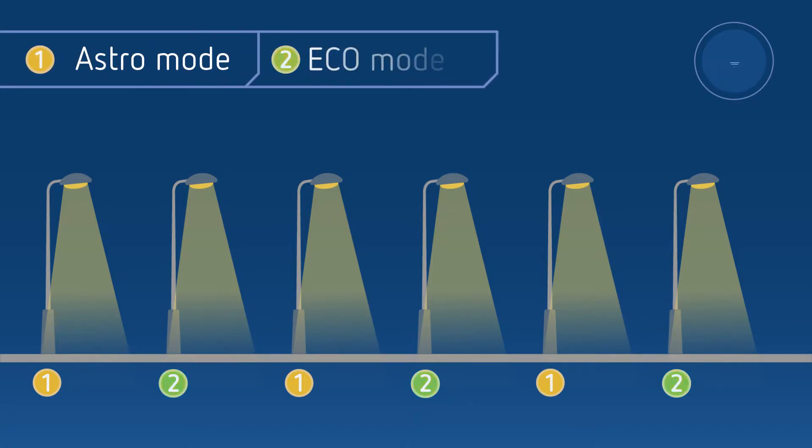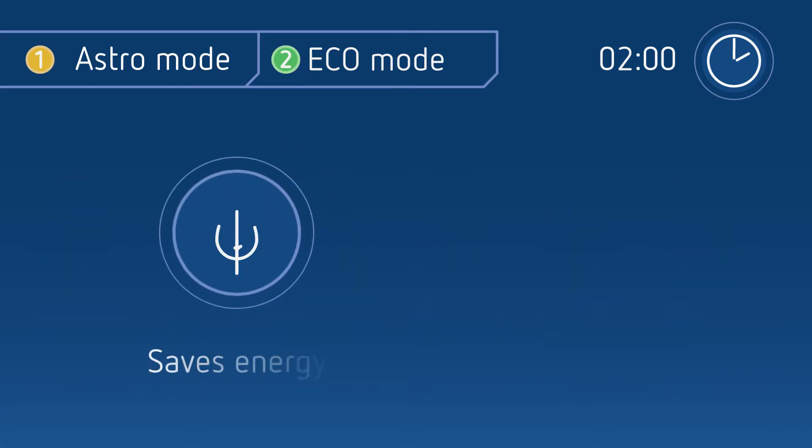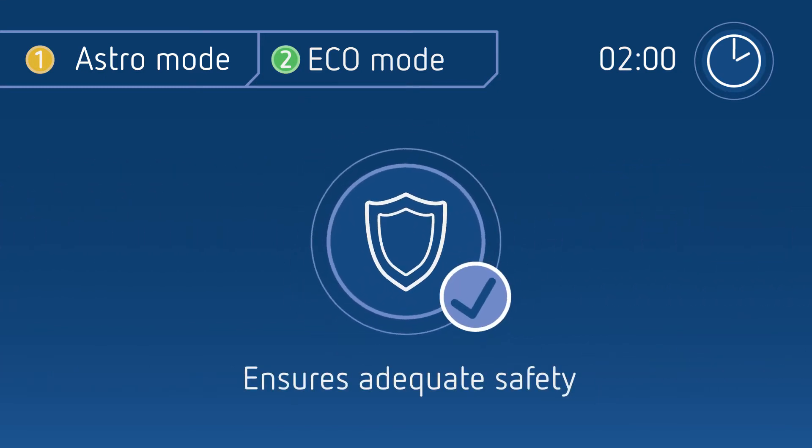At a set time, channel 2 switches to eco mode. These lamps are switched off, which saves energy while the lamps are conserved. Even with reduced lighting, adequate safety is ensured.